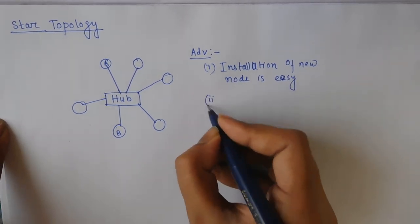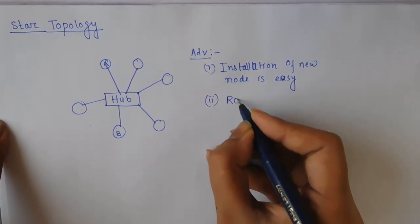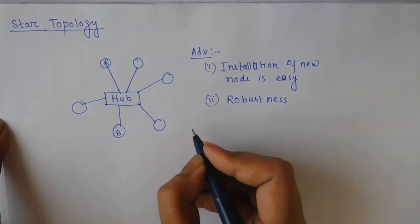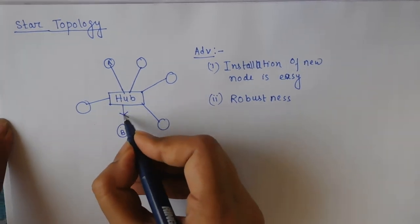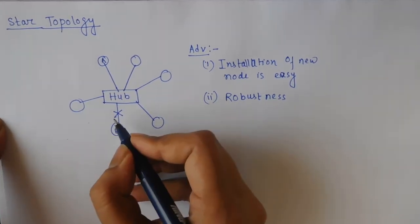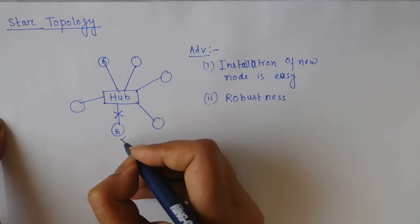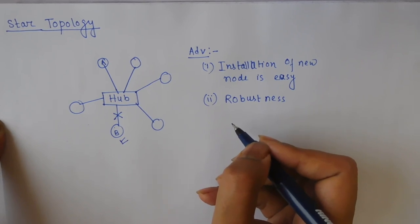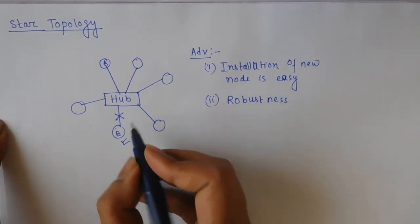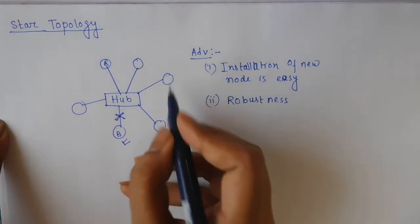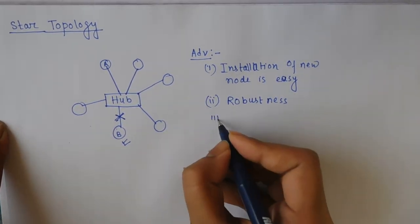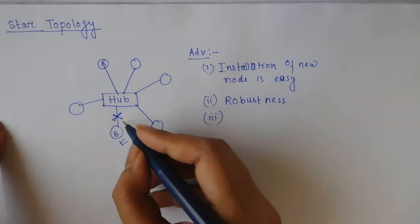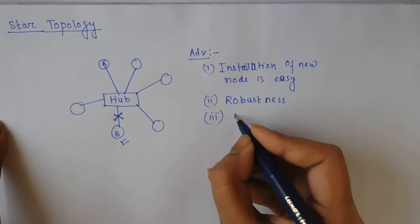The term robustness — if this link fails, only that node is affected but the rest of the network works properly, so it is robust because it does not hamper the rest of the network. Easy identification of fault: if any fault occurs it is easily identified.